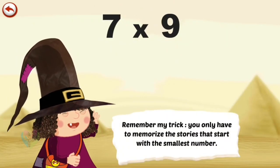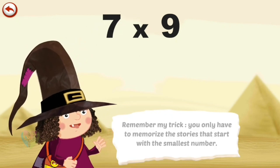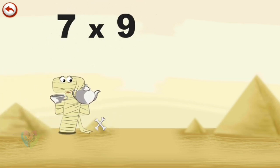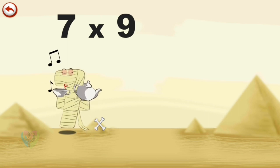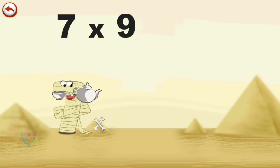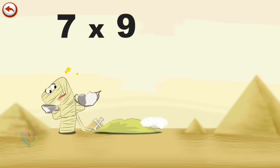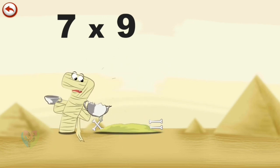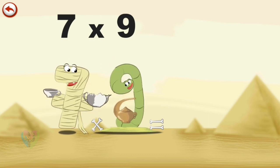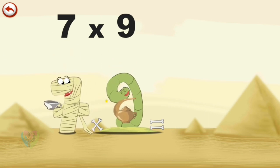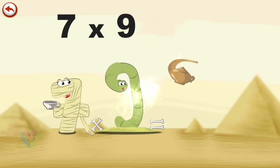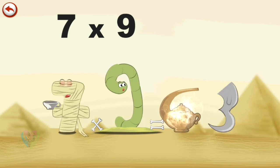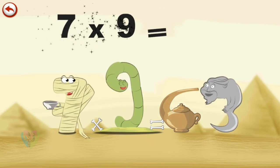Remember my trick: you only have to memorise the stories that start with the smallest number. What's the story of 7 times 9? Ram 7 finds what he thinks is a teapot and gives it a rub to make it clean. But what a surprise — it isn't a teapot. It's an old magic lamp in the shape of a 6, and from it springs a genie in the shape of a 3. 7 times 9 is 63.